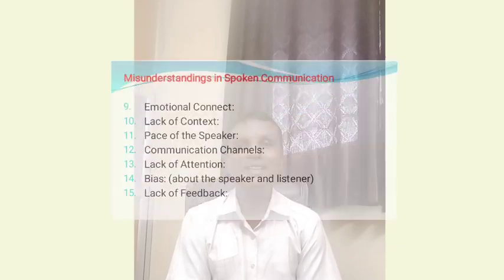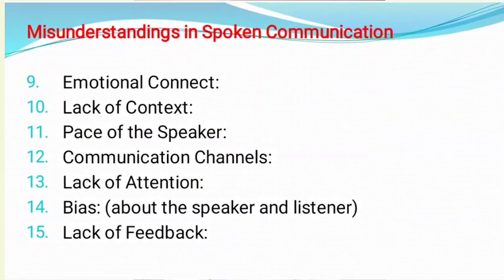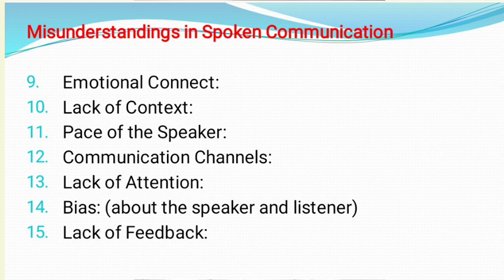The next one is bias — prejudice about certain things. Sometimes we have prejudices about people or ideas, and that can also be a barrier to spoken communication. And the last but not the least is lack of feedback. The speaker needs to have feedback from the listeners so that he can understand whether he is communicating things properly or not. If there is no feedback, he will keep on speaking, but that will not be effective communication — in fact, that will be miscommunication.